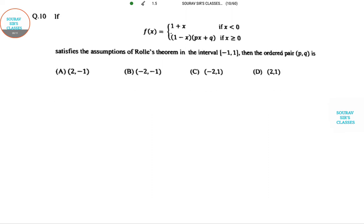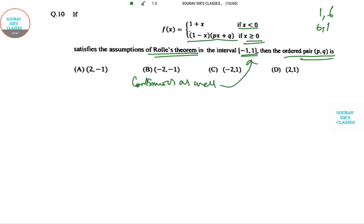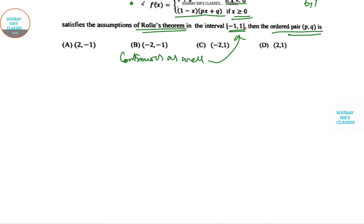Question number 10 says they have given F(x), 1 plus x where x is positive and 1 minus x into this where x greater than or equal to 0, and it satisfies the assumptions of Rolle's theorem in this interval. The ordered pair of P, Q. Remember that ordered pair means 1, 6 and 6, 1 are not the same. This lies between minus 1 to 1. This function is continuous as well within this particular interval.